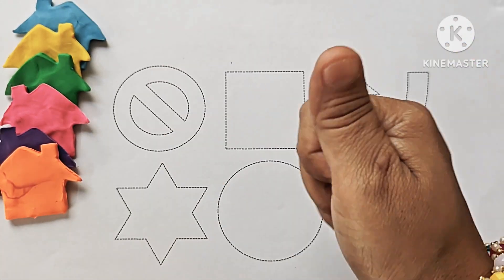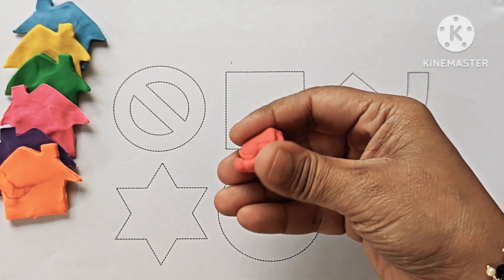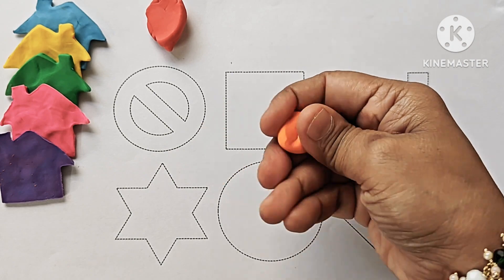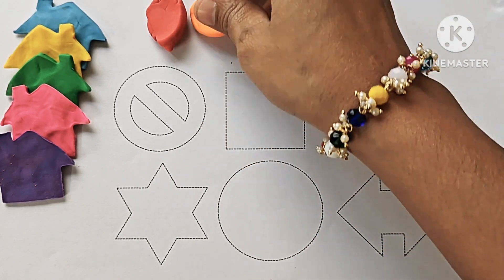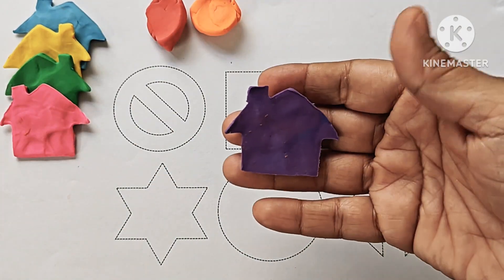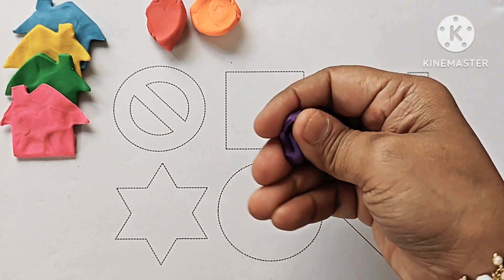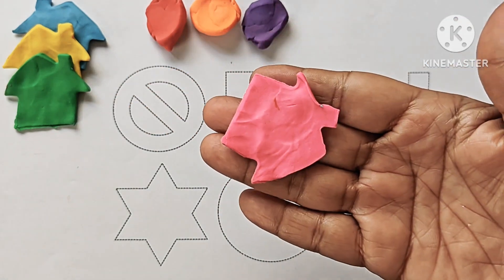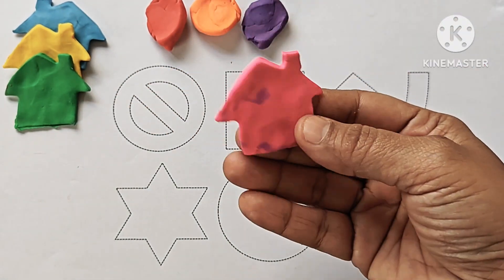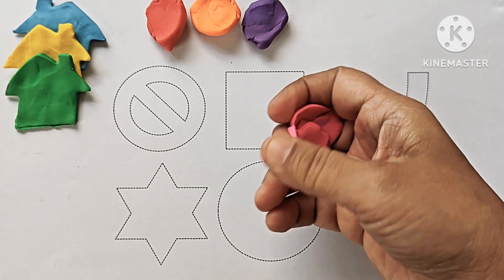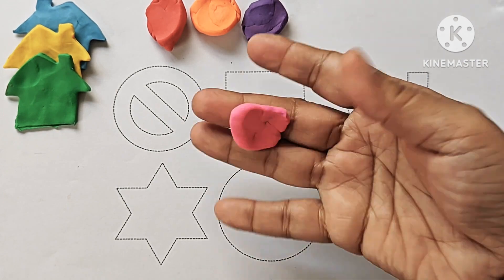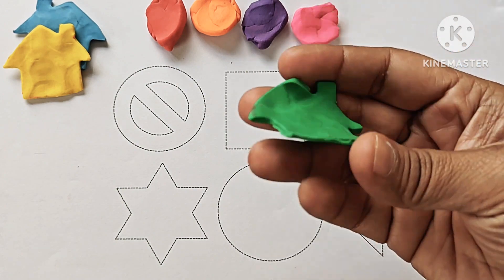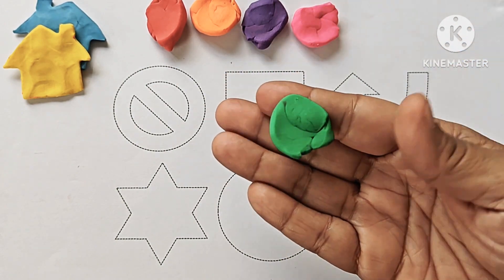This is red colored house. This is orange color. This is purple colored house. What is the color of this house? This is pink. Pink color. This is green color. House is in green color.